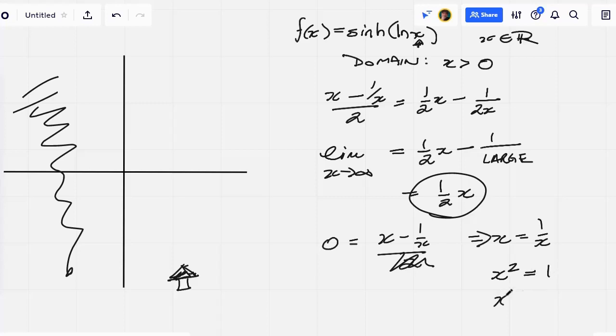We have two solutions to that: plus or minus 1. But we are not interested in the negative solution because we have to explicitly restrict the domain here. So let's mark that point here: it's going to be (1, 0).